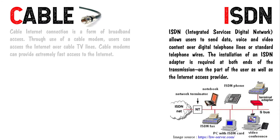ISDN, that is Integrated Services Digital Network, allows users to send data, voice, and video content over digital telephone lines or standard telephone wires. The installation of an ISDN adapter is required at both ends of the transmission — on the part of the user as well as the internet access provider.